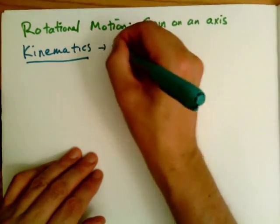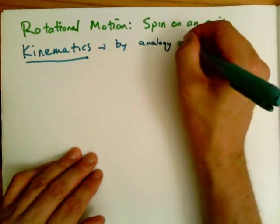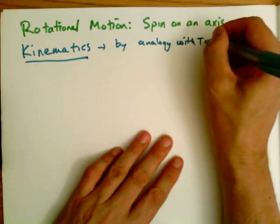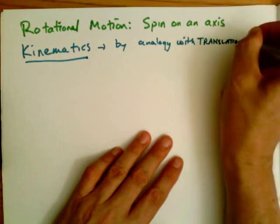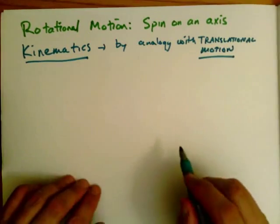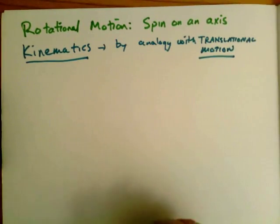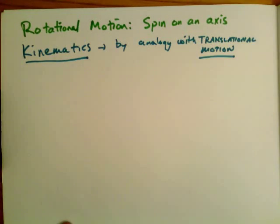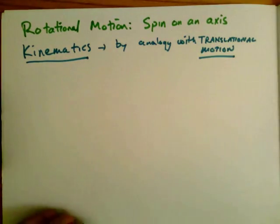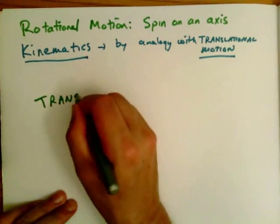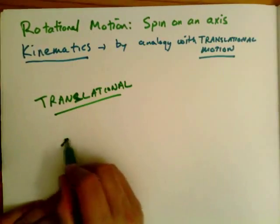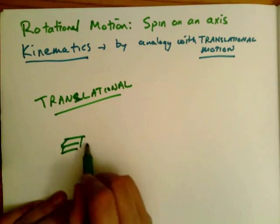We want to talk about the kinematics — we want to describe that motion — and we want to do this by analogy with what we would call regular or translational motion. When I talk about translational motion, I'm talking about the motion of a body through space, treating it as a point-like object.